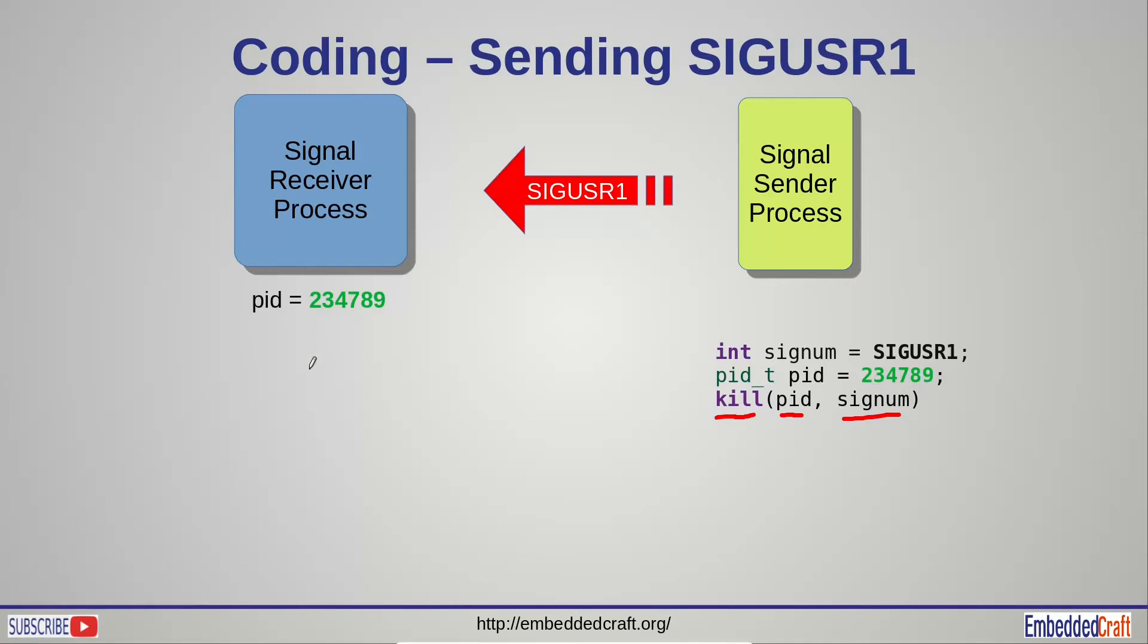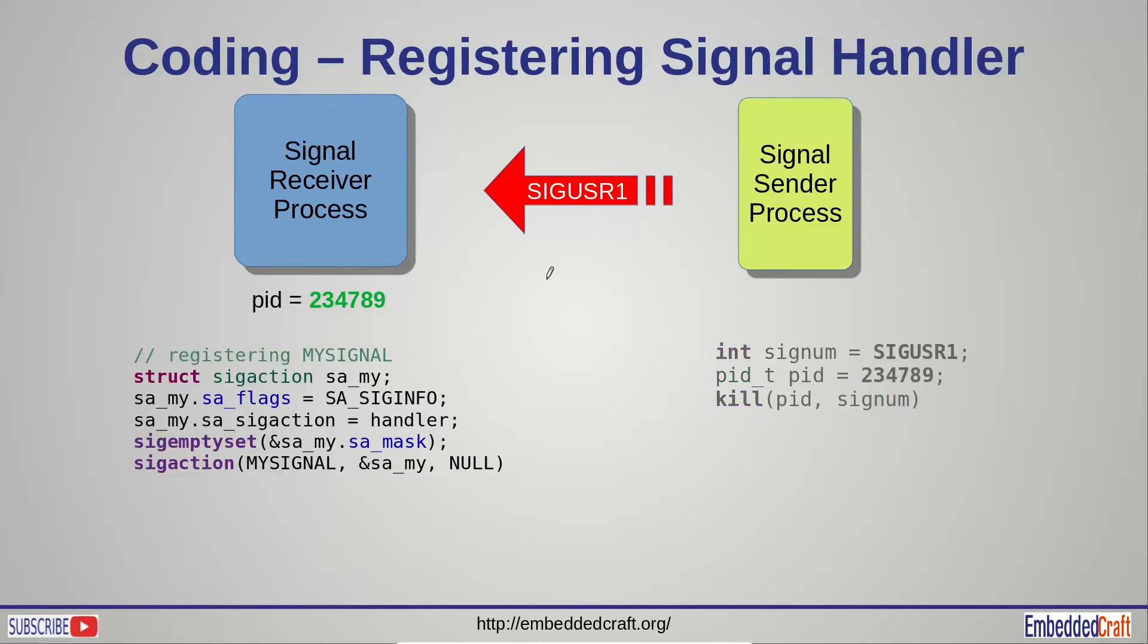Signal is SIG user 1. The process ID of the signal receiver, suppose process ID of signal receiver is 234789. Signal receiver has to register signal handler. For that we have to use sigaction structure. The sa_sigaction field will get the name of signal handler. SIG empty set API will unmask all signals. Sigaction API is registering my sig action with my signal. It means when SIG user 1 signal is received, then the handler function will execute.